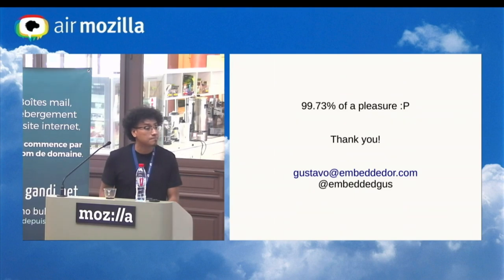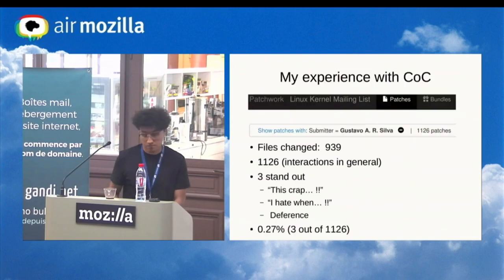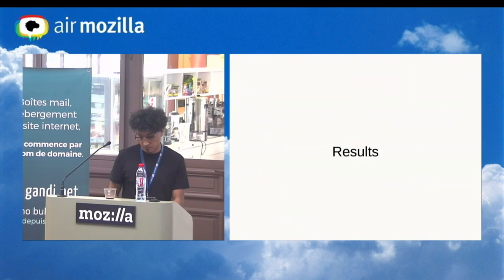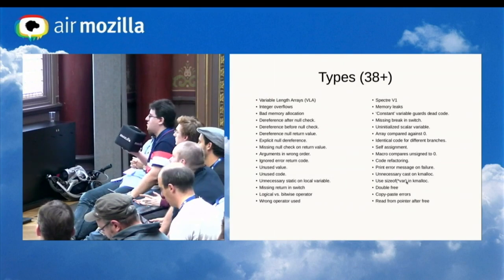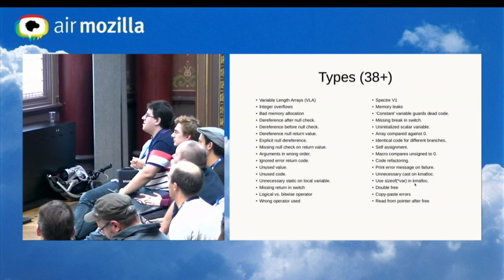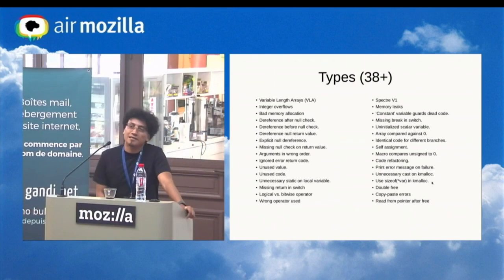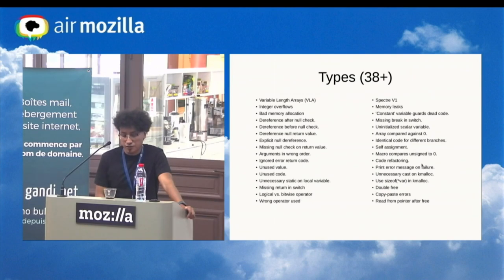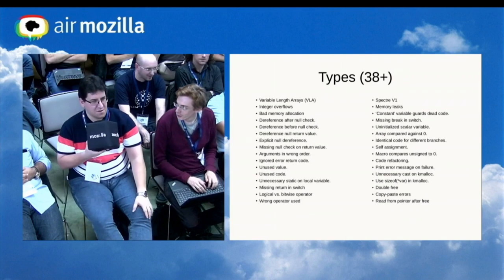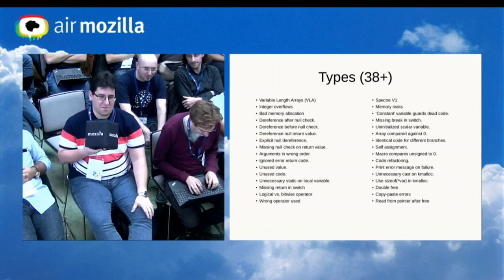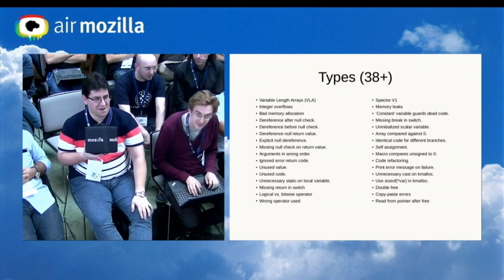Q&A: A question about why using 'sizeof *pointer' in kmalloc is shown as an issue. The speaker clarifies it's a matter of style — it prevents allocating the wrong amount of memory if the struct fields change as code evolves. The questioner confirms this is actually the recommended practice, not a bug. The speaker agrees: it's about style — using sizeof on the variable rather than the type.